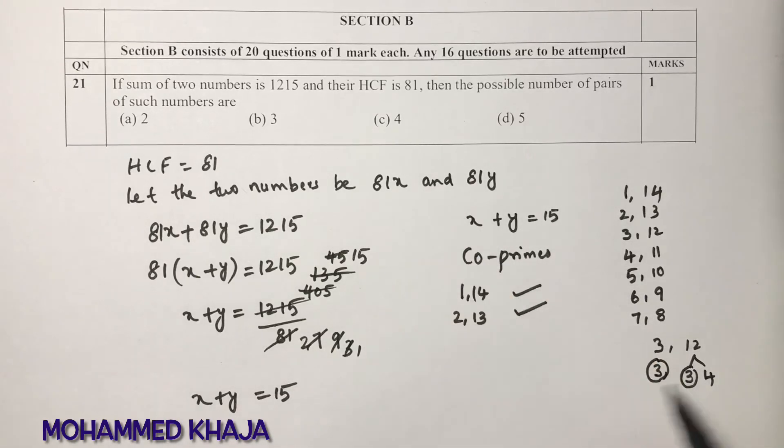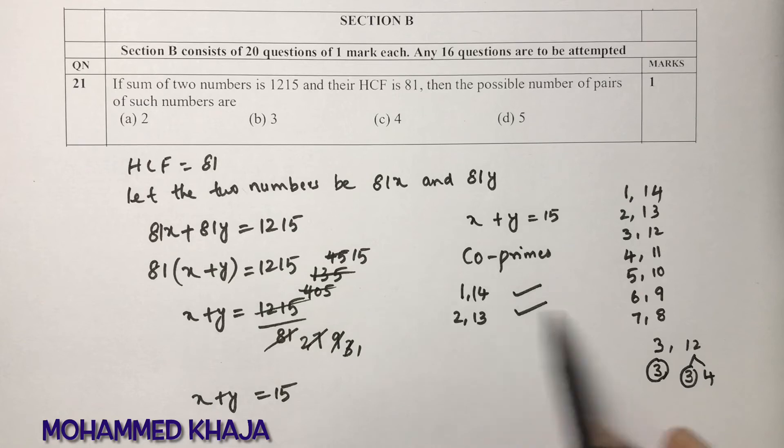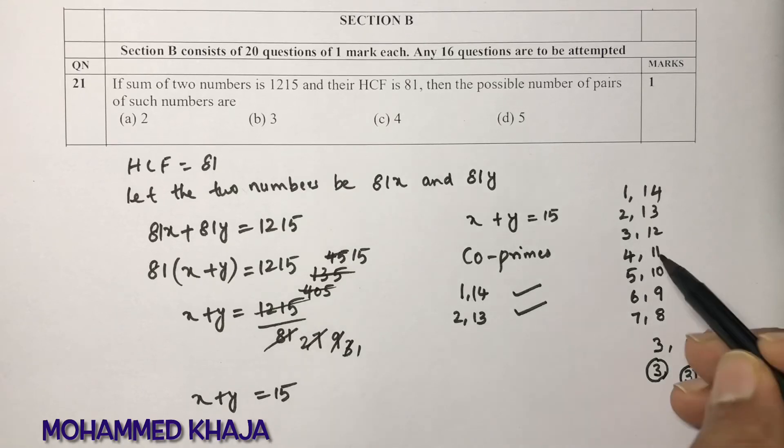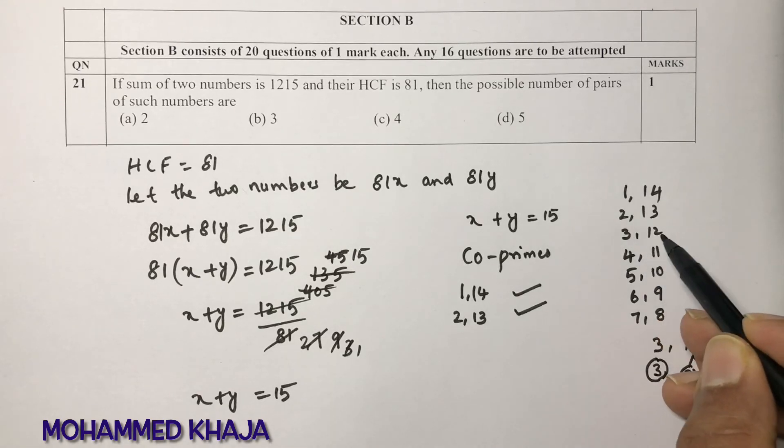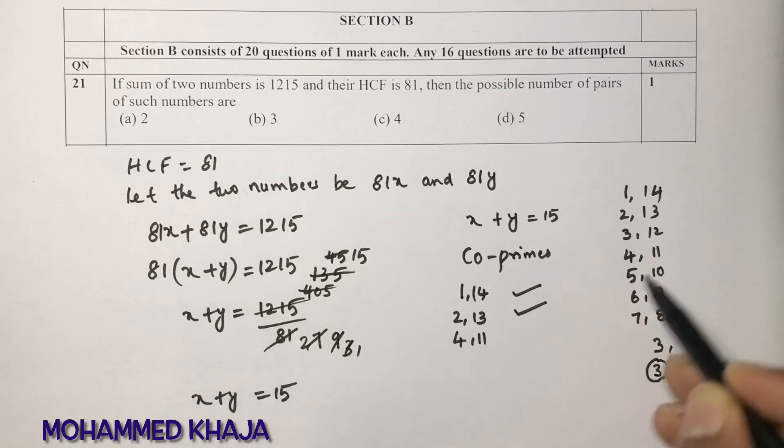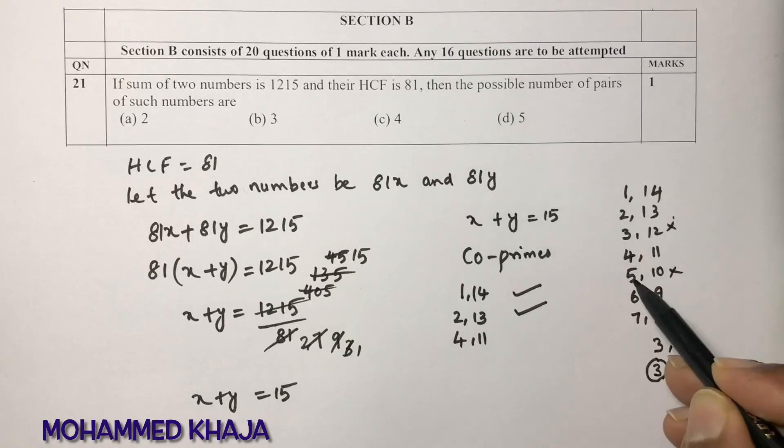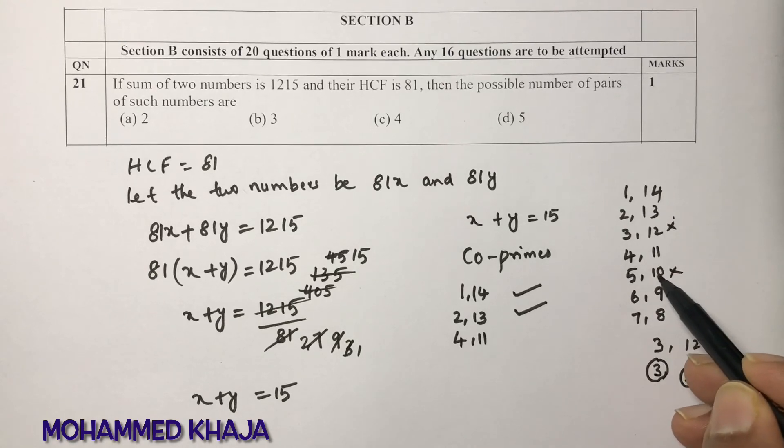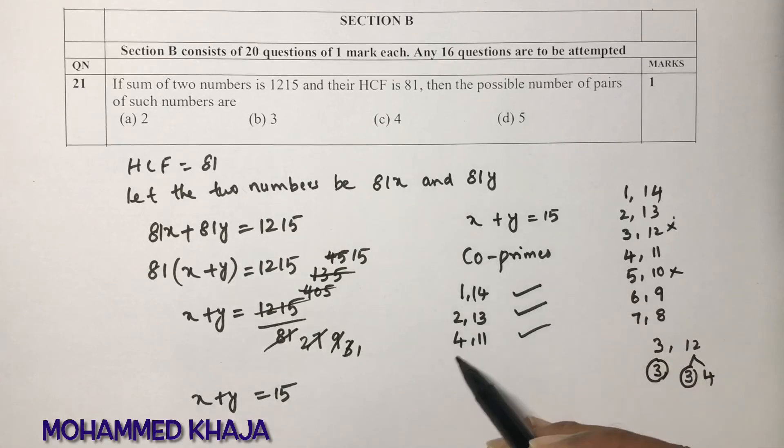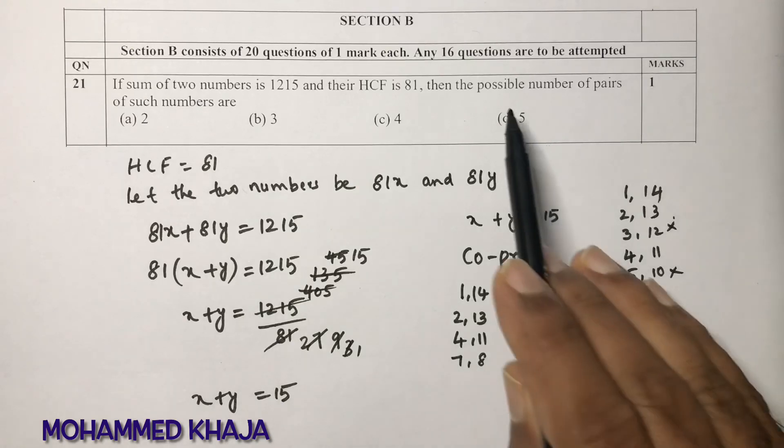If you have something else common in both the numbers, then HCF will change. If I take the two numbers as 3 and 12, then 3 is common, so HCF will change. You need to take only co-primes. 4 and 11 are co-primes. 5 and 10 I cannot take because 10 has a factor 5. 6 and 9 also I cannot take because 3 is common. 7 and 8 are co-primes.